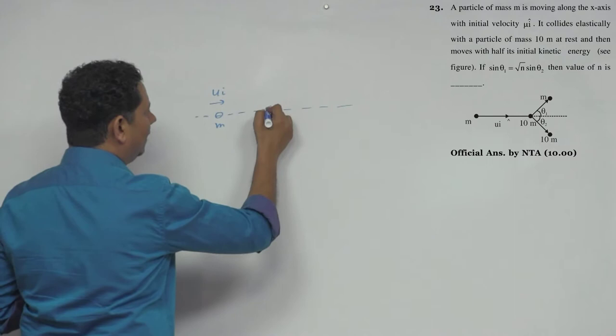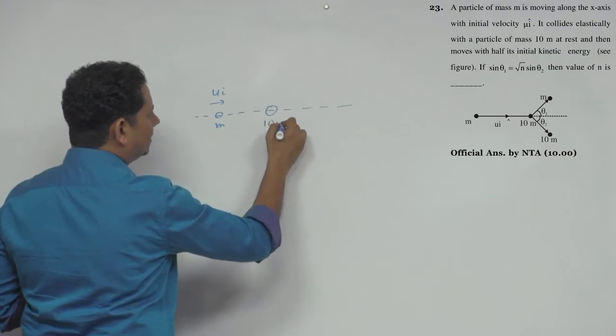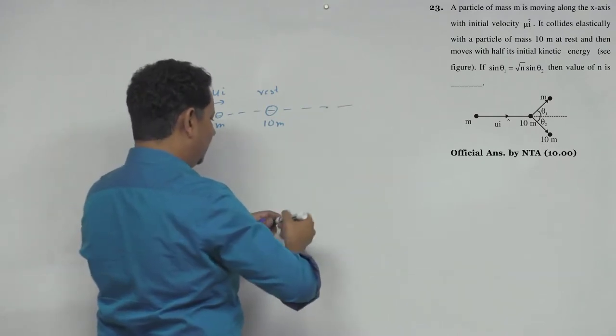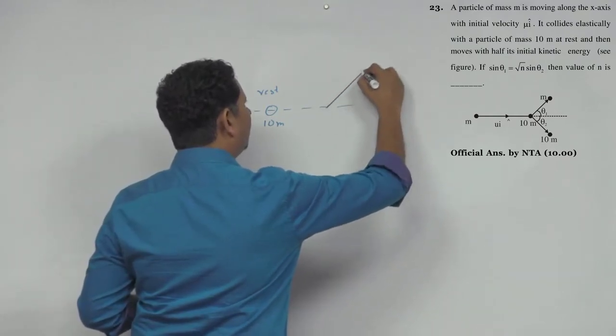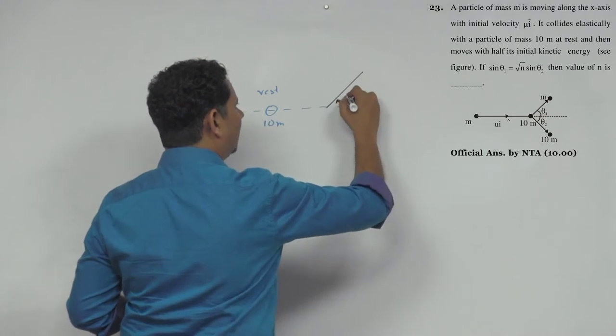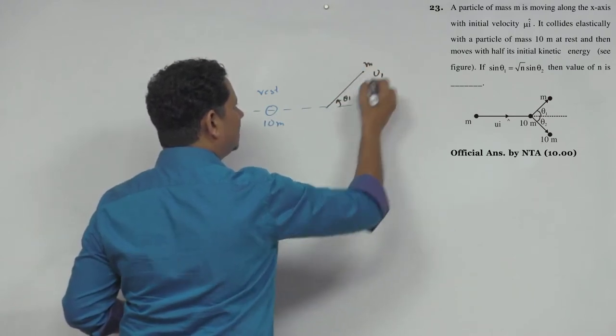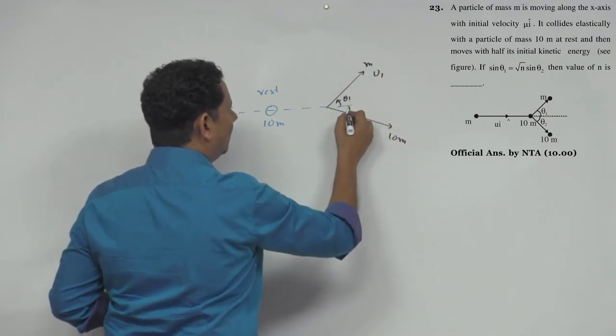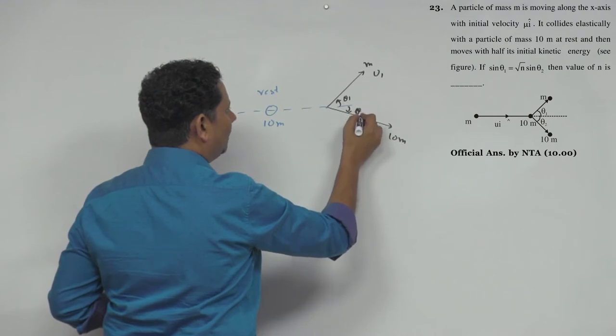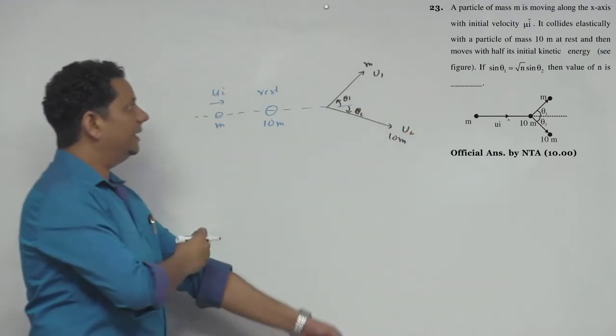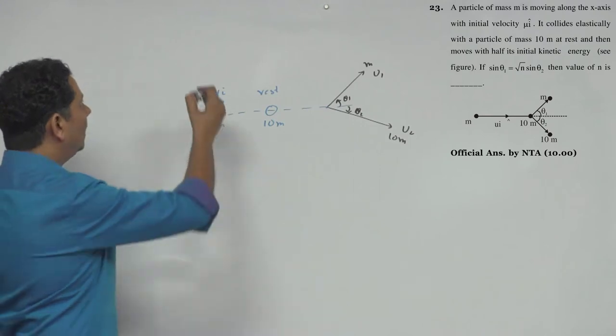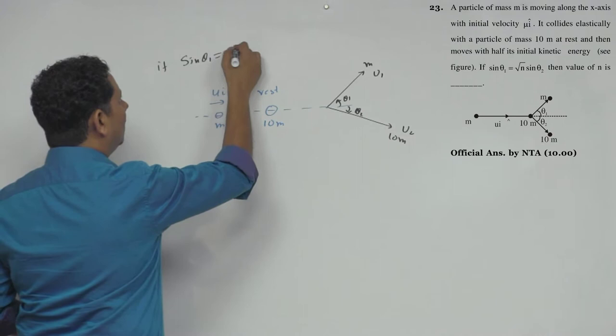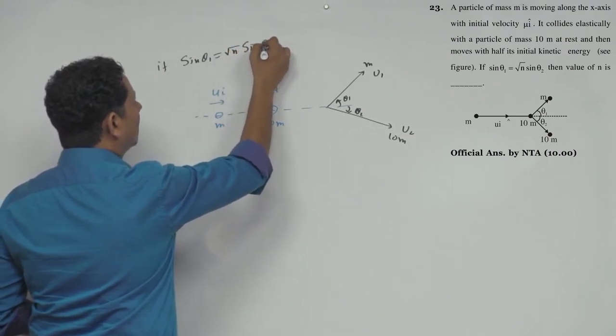The velocity u i-cap is in this direction. The second particle has mass 10m at rest. After collision, the particle with mass m goes at angle θ₁ with velocity v₁. The particle with mass 10m goes at angle θ₂ with velocity v₂. We need to find n where sin θ₁ equals √n times sin θ₂.